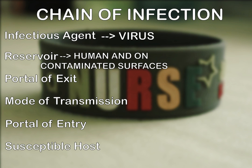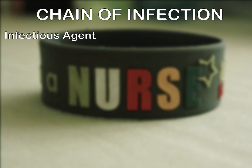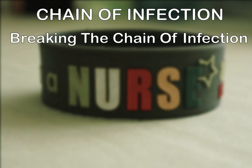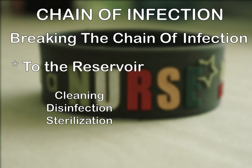Now that we understand the chain of infection, we can now start to learn how to break it to prevent the spread of this deadly virus. Since it is a virus, we can prevent it from going to the reservoir by cleaning, disinfection, and sterilization. We must observe a clean environment, disinfect things usually brought outside the house, and the most commonly touched objects inside the house. Proper sterilization must also be observed in healthcare facilities.